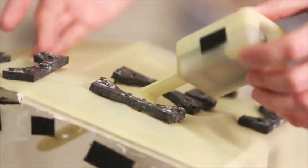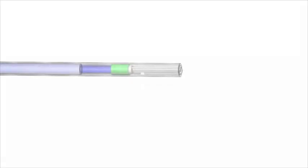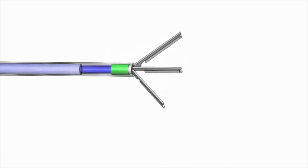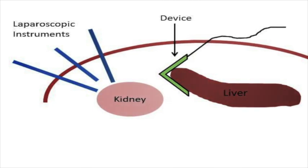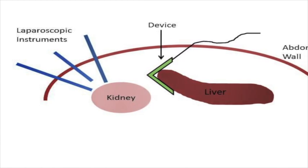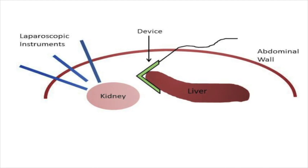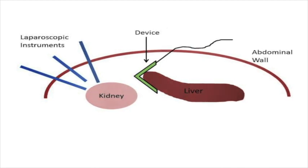When they do a laparoscopic or minimally invasive kidney procedure, you have this great organ your liver which basically just flops on top of your kidney. In order to do a procedure on that kidney, the liver has to be held out of the way. So this was a device that can be deployed through an existing incision inside of the abdominal wall to hold the liver out of the way during the procedure without creating an additional incision and without requiring an additional hand in the operating field.